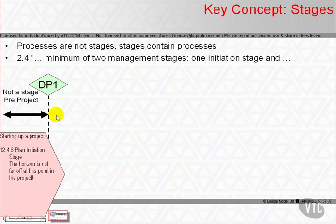The 'worth the cost of a closer look' decision is made in Activity Authorised Initiation, which is the first activity within the process of Directing a Project, or DP for short in the exam syllabus references. The DP process is described in Chapter 13 of the manual. The PRINCE2 processes are described in Chapters 12 through 18.